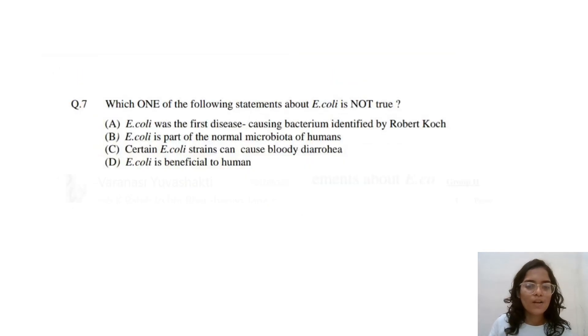Next, which one of the following statements about E. coli is not true. E. coli was the first disease causing bacteria identified by Robert Koch. No, the first bacteria discovered was tuberculi. And Robert Koch said about anthrax, cholera and tuberculi. So, it is A.